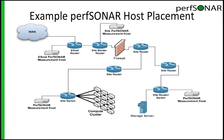This diagram shows a typical example of where you might want to deploy your perfsonar host. There might be one connected to your router that connects you to the backbone, one right next to your site firewall, and one right next to your storage servers deep inside your campus. That way you're able to run tests between the perfsonar host next to your storage server to verify whether or not your firewall is causing a performance impact, and you're able to run tests between the perfsonar node and your remote collaborators.